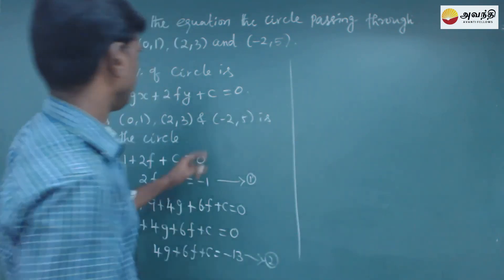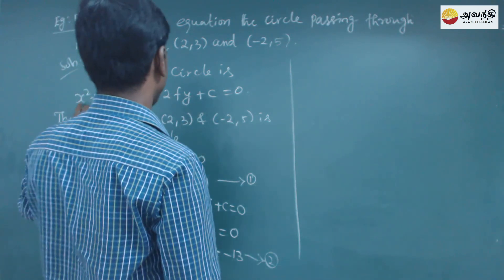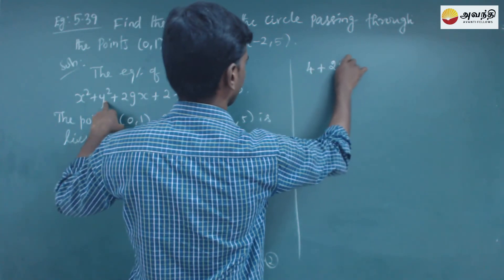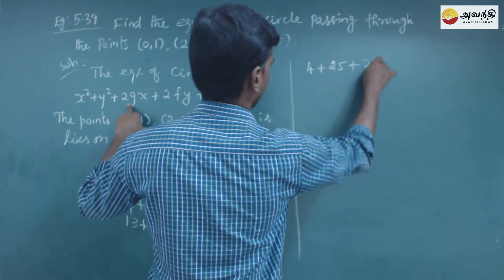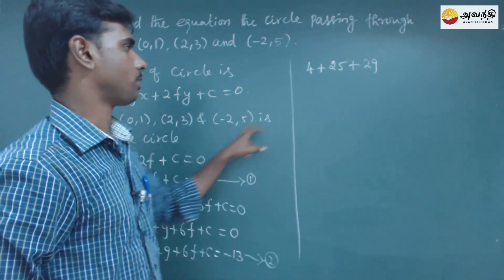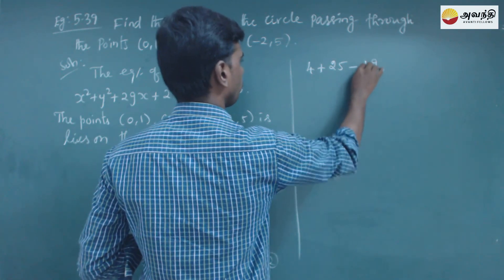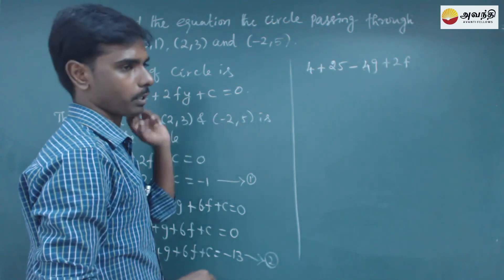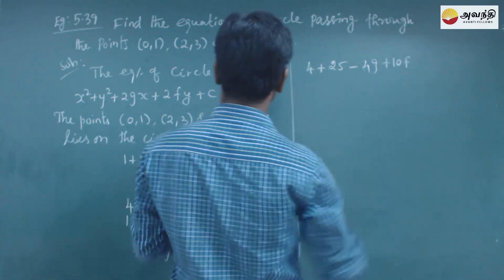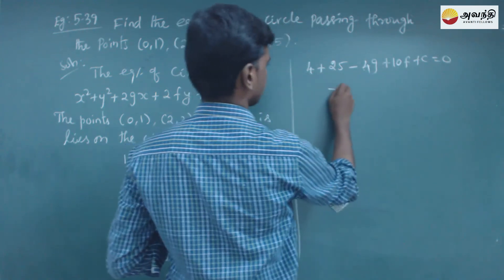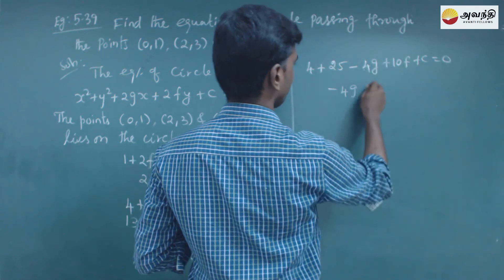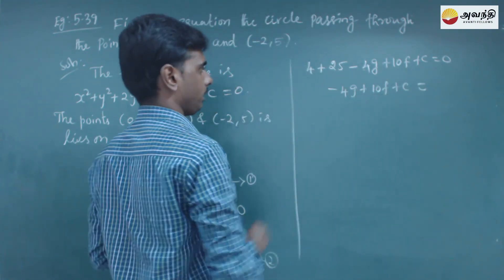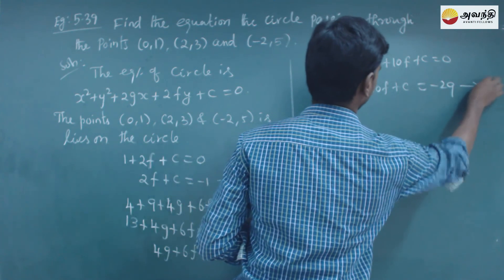Now substituting the point (-2,5): (-2)² plus 5² plus 2g(-2) plus 2f(5) plus c equals 0. That is 4 plus 25 minus 4g plus 10f plus c equals 0. So minus 4g plus 10f plus c is equal to minus 29. This is equation number 3.